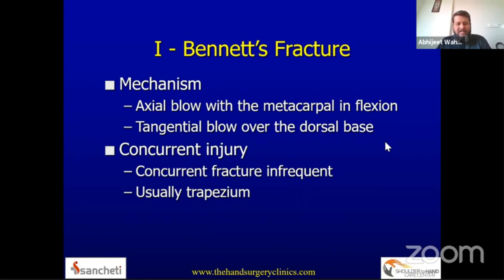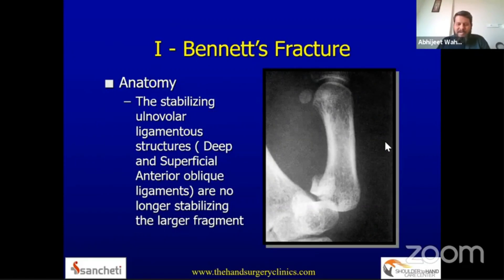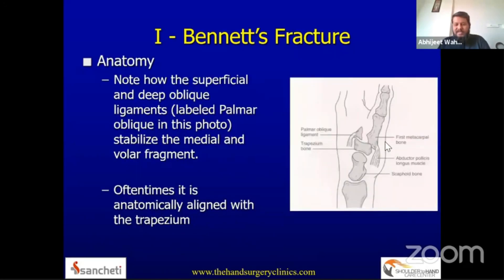The usual mechanism is an axial blow with the metacarpal in flexion, or a tangential blow over the base of the metacarpal. Concurrent fractures of the trapezium are often associated and should be looked for. There is basically a fracture subluxation at the first CMC joint; the fracture line is vertical or oblique, and the volar fragment is of variable size. Because the medial fragment remains attached to the volar beak ligament, the pull of the abductor pollicis longus displaces or dislocates the first metacarpal depending upon the size of the medial fragment.